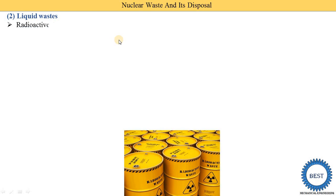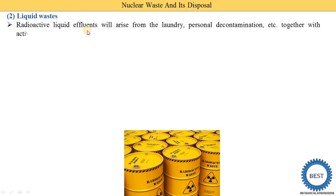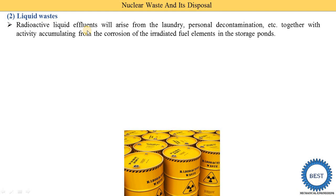Now we understand what liquid waste is and how it is disposed. Radioactive liquid effluents arise from the laundry and personal decontamination, together with activity accumulating from the corrosion of irradiated fuel elements in storage ponds. Some fuels are stored in storage ponds, and liquid waste comes from laundry and personal decontamination processes.